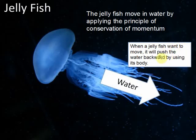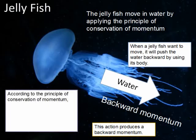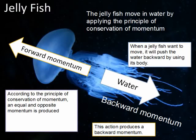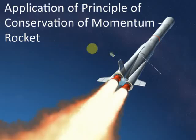When a jellyfish wants to move, it pushes water backwards using its body. This action produces a backward momentum. According to the principle of conservation of momentum, it generates an equal forward momentum in the opposite direction, which helps the jellyfish move forward. This is similar to the case of an explosion, where the momentum acts on the jellyfish body and pushes it forward.